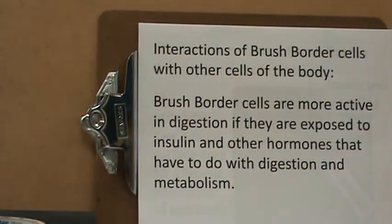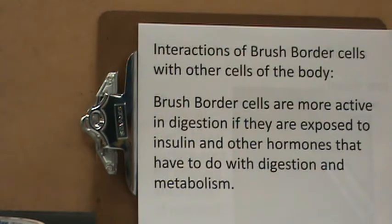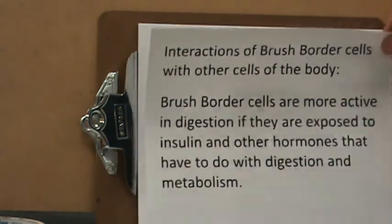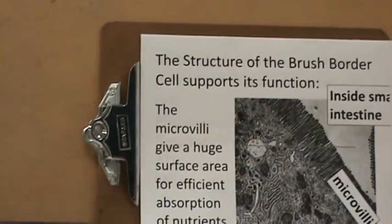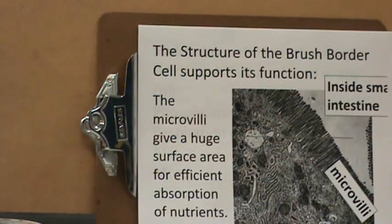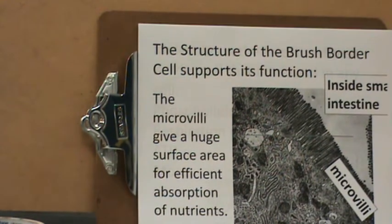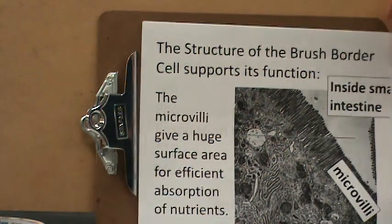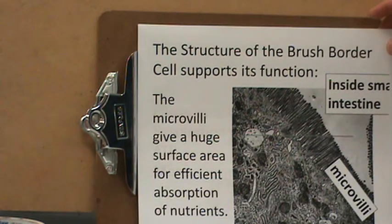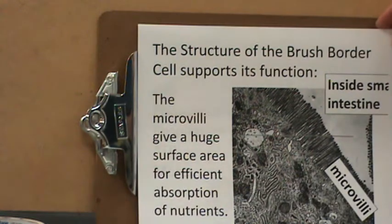Interactions of brush border cells with other cells of the body: brush border cells are more active in digestion when exposed to insulin and other hormones related to digestion and metabolism. The structure of the brush border cell supports its function because the microvilli give a huge surface area for efficient absorption of nutrients — much greater surface contact with the food coming into the intestine.